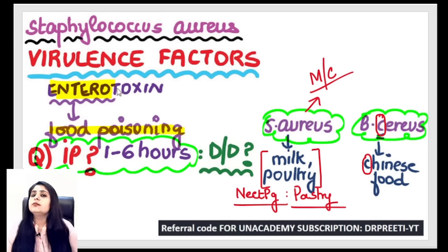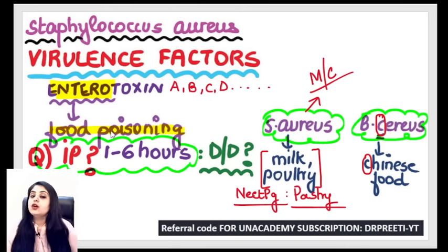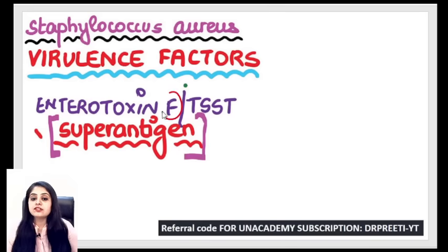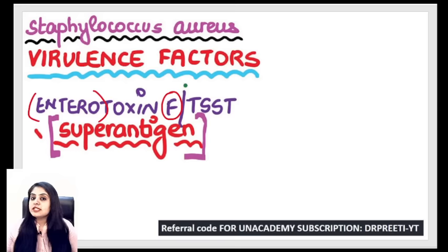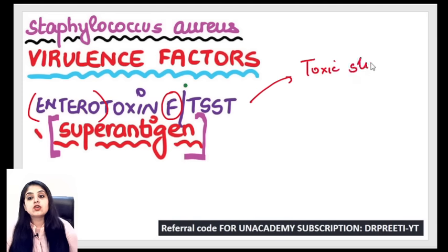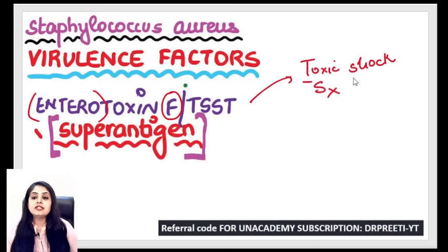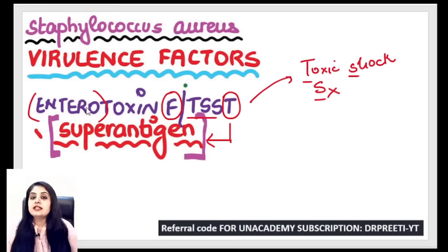Enterotoxins are of many types — A, B, C, D, and so on — and all cause food poisoning, except enterotoxin F. Enterotoxin F is fishy — although it sounds like an intestinal problem, it doesn't cause food poisoning. Instead, it causes TSST — toxic shock syndrome toxin — which causes TSS. This toxin is known as a superantigen, not a regular antigen. So enterotoxin F is a superantigen causing toxic shock syndrome.